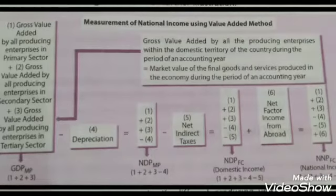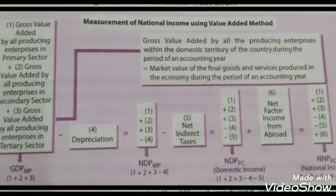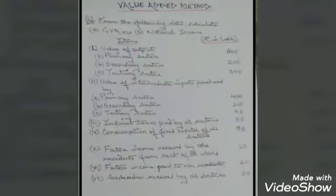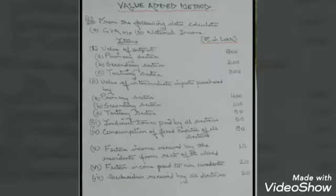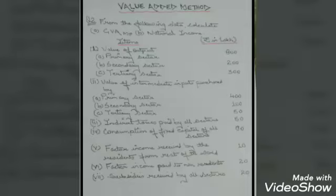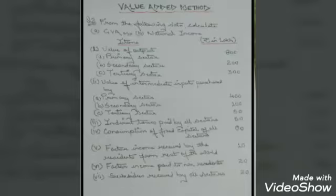Kindly go through it very thoroughly so that you are able to do the numericals. Let's start with the first numerical. From the following data you are supposed to calculate gross value added at market price and national income. The data is in rupees lakh. The value of output of the primary sector is 800, secondary sector is 200, and tertiary sector is 300.